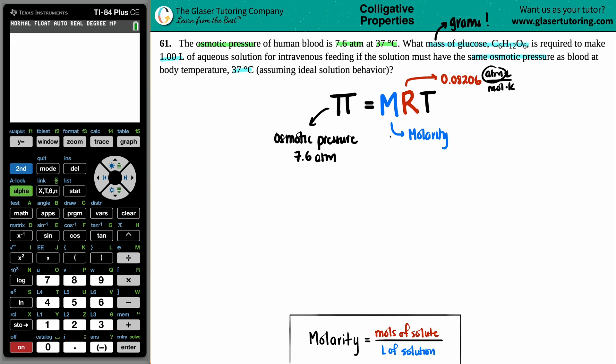The units for this R value dictates all the units of this formula. The units for R is atm times liter divided by mole times Kelvin. We've seen this R value when we were doing PV equals NRT. It's the same R value with the same units.